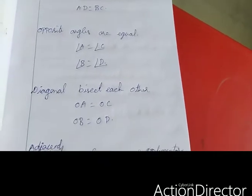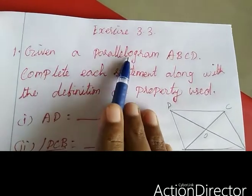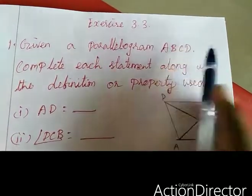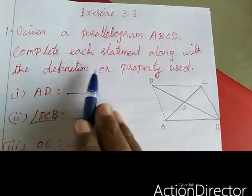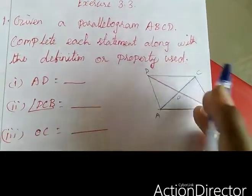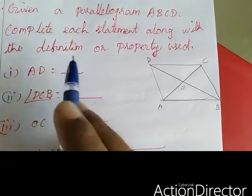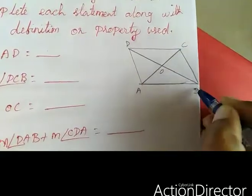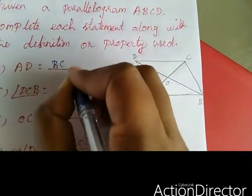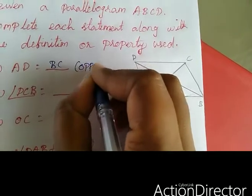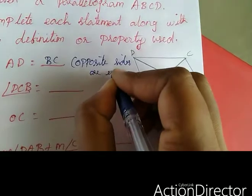Now we will move to the exercise. Exercise 3.3, first sum: given parallelogram ABCD, complete each statement along with the definition or property used. First, AD equal to BC, by the property that opposite sides are equal.